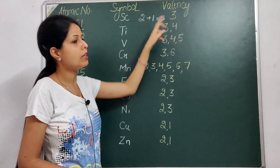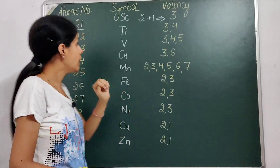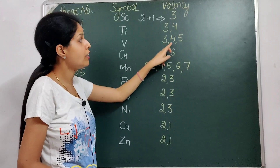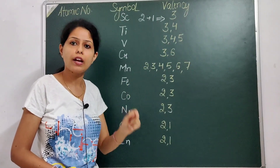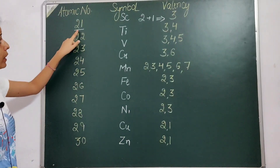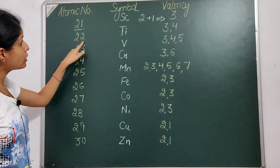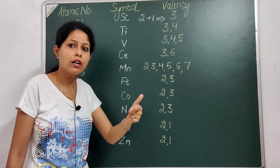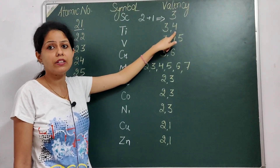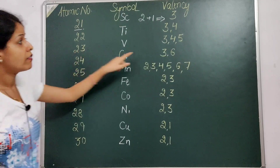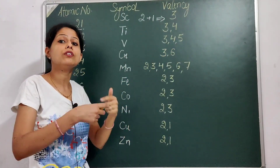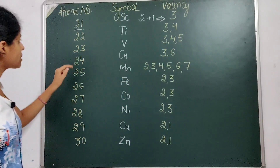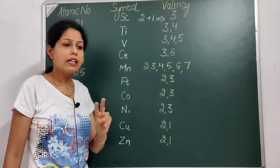Next comes Vanadium, with atomic number 23. Following the same pattern of increasing by one, Vanadium has 3 variable valencies: 3, 4, and 5. You can also use the digit-addition trick: 2+3=5, which is one of Vanadium's valencies. Next comes Chromium, atomic number 24, which has 2 valencies: 3 and 6. Here, Scandium's valency of 3 is doubled to get 6.